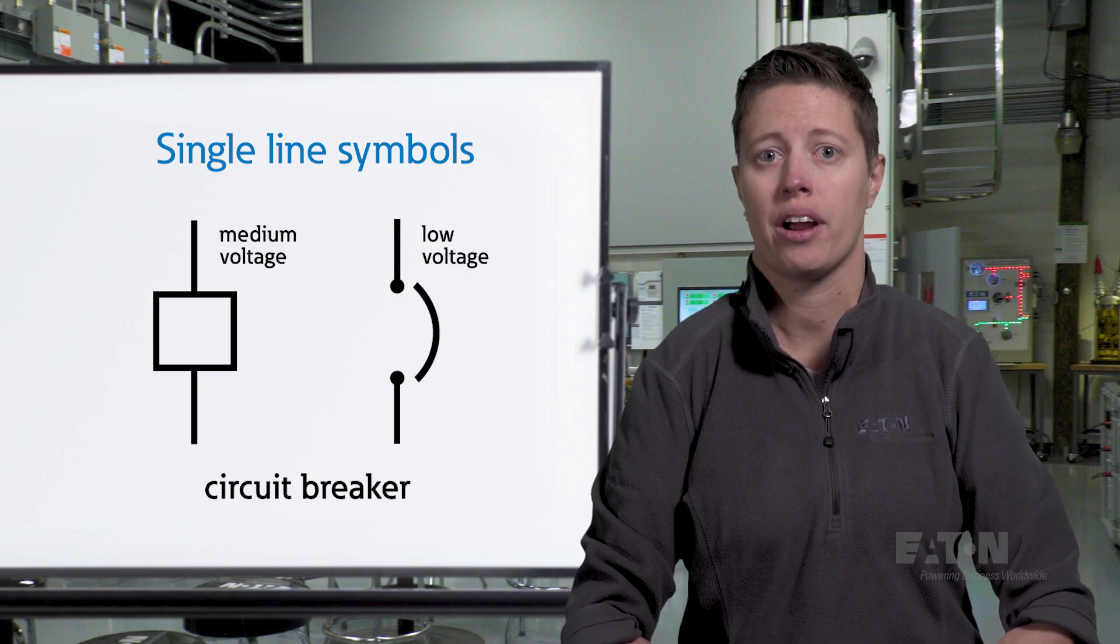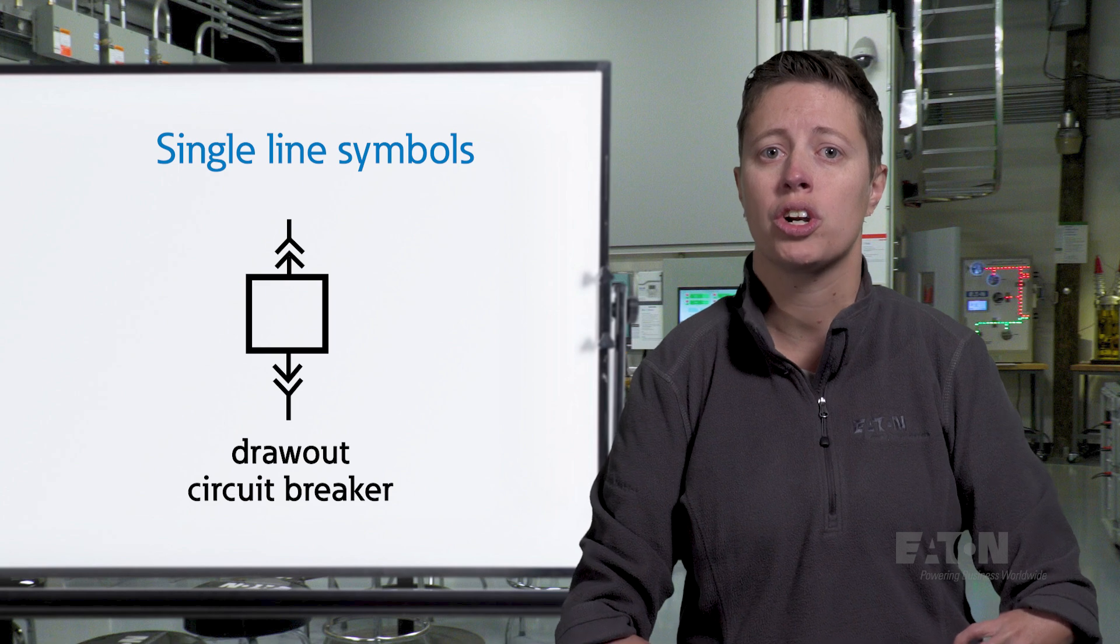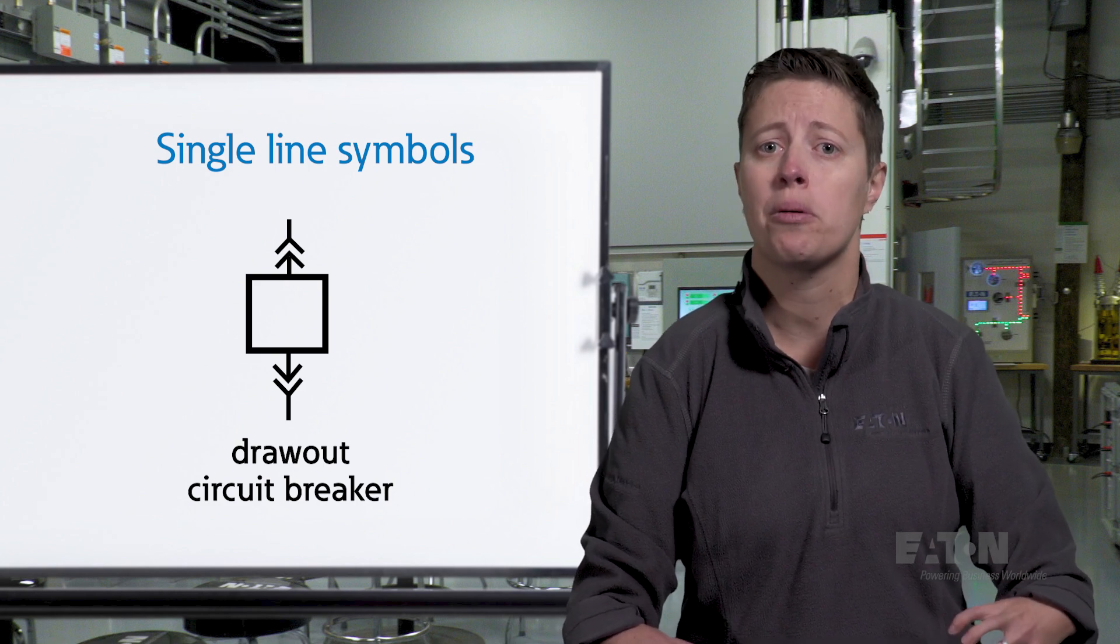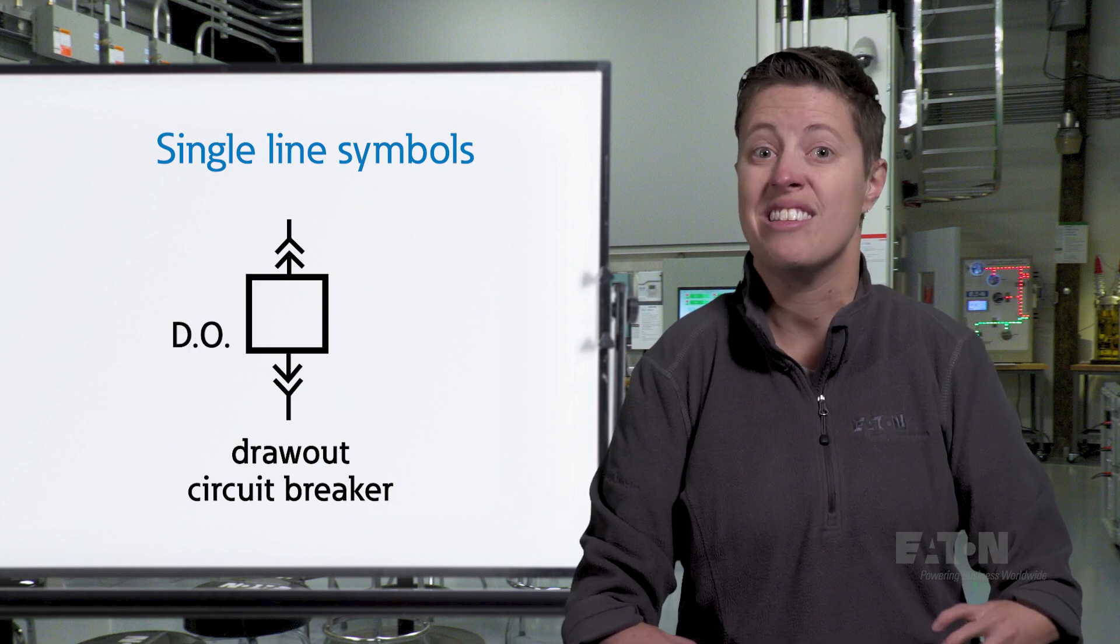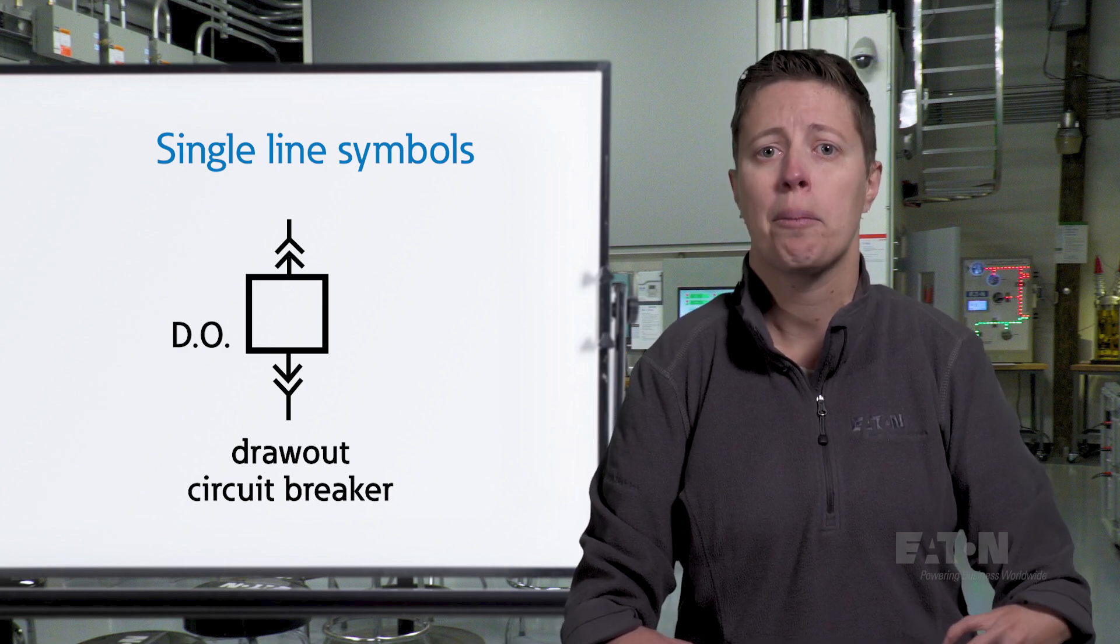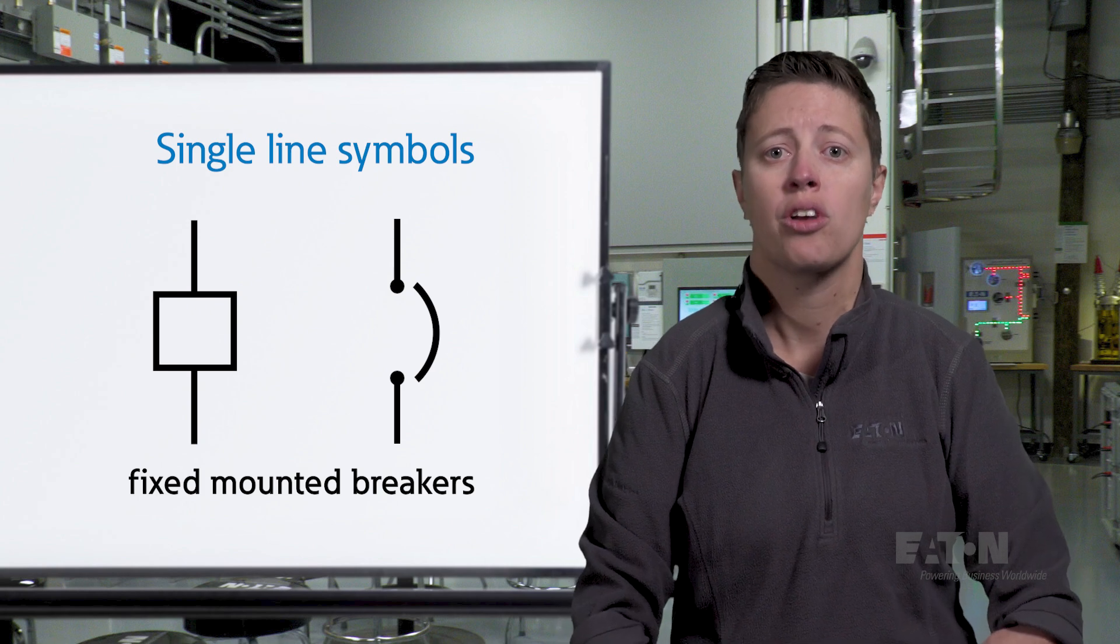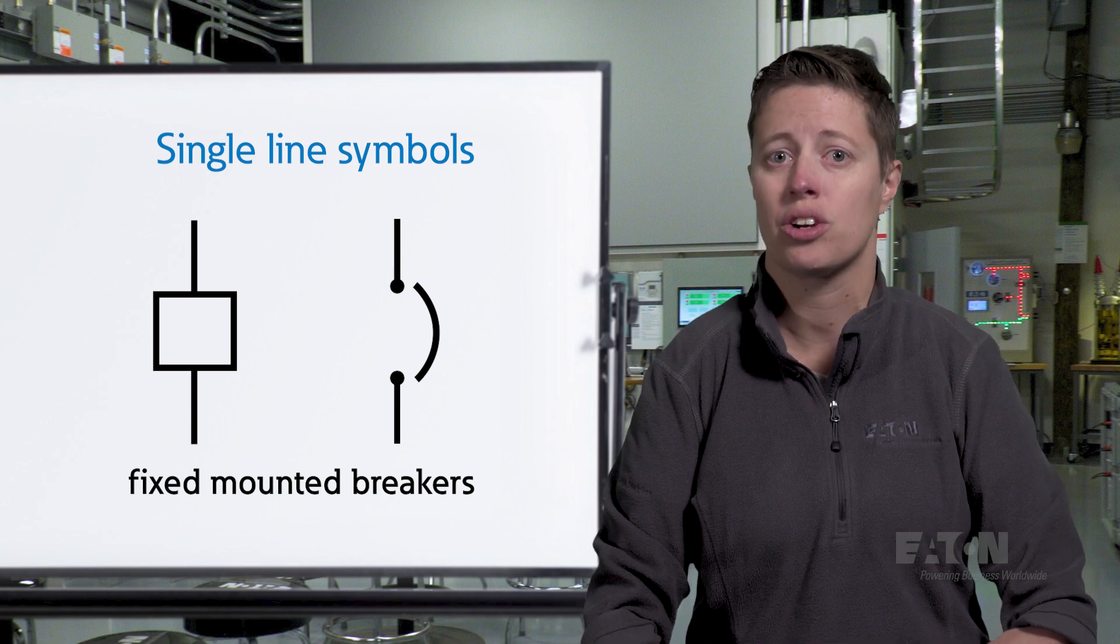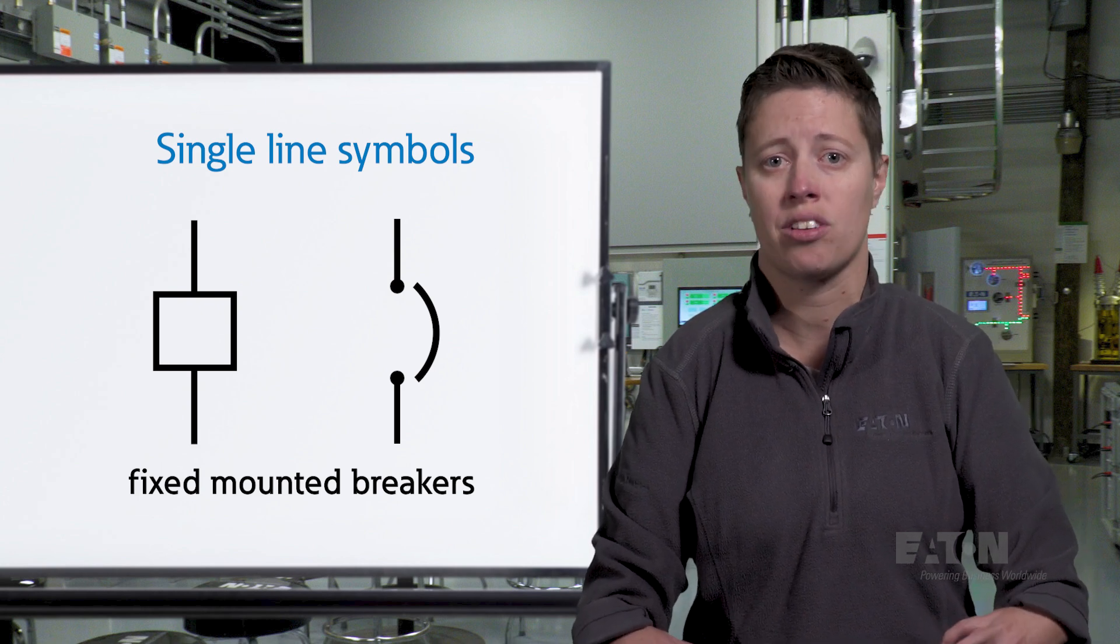A draw out circuit breaker symbol represents a breaker that can be removed from its enclosure for maintenance or replacement without disturbing the wiring of the equipment. Draw out capability is typically represented by two carats or chevrons above and below the circuit breaker. The abbreviation DO indicating draw out may also be noted. Draw out breakers are commonly used in applications where frequent maintenance or testing is required. On the other hand, fixed-mounted circuit breakers are permanently installed in their enclosure. Fixed-mounted breaker symbols do not include any additional carats or chevrons. Fixed-mounted breakers are used in applications where the breaker does not need to be frequently accessed for maintenance.